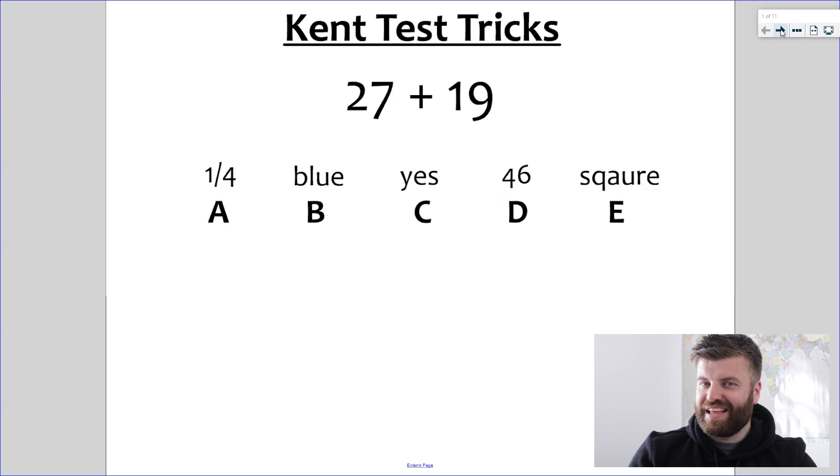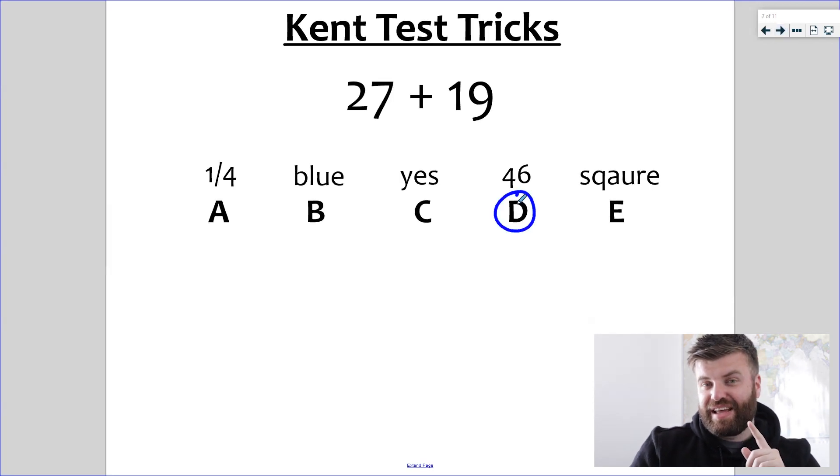The question is 27 plus 19. Now, the thing about the Kent Test being multiple choice, you know the right answer is in there somewhere from A to E. But look at these options. This is not going to force you to do any maths. There's only one sensible answer, and that is clearly D.